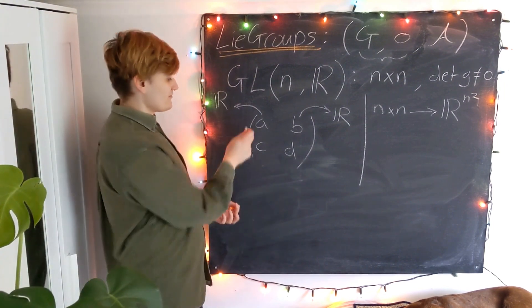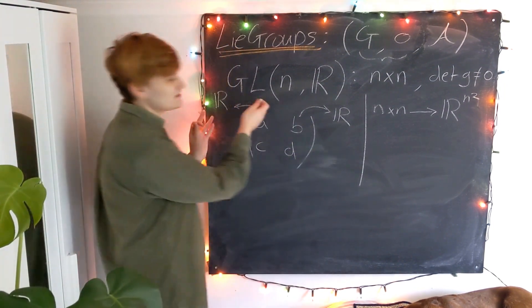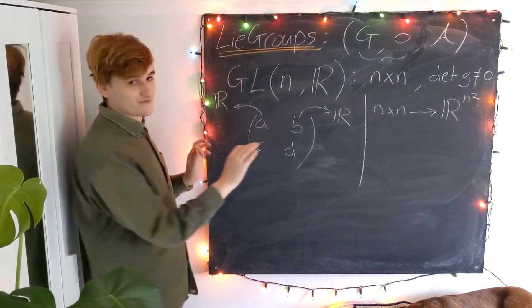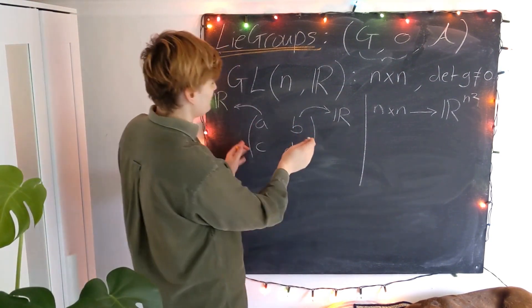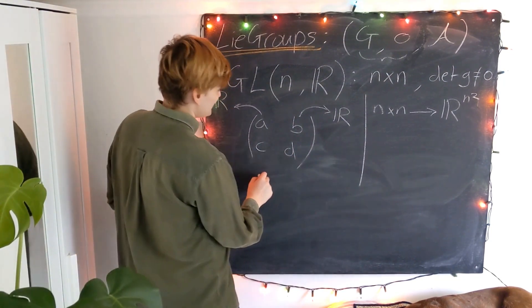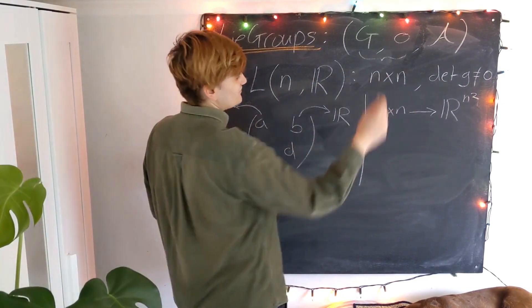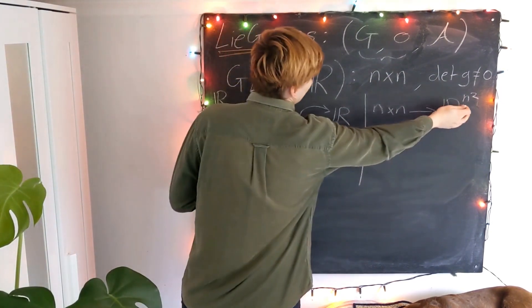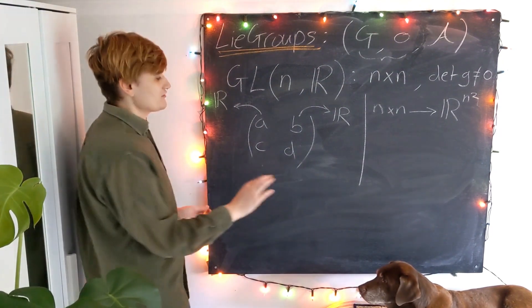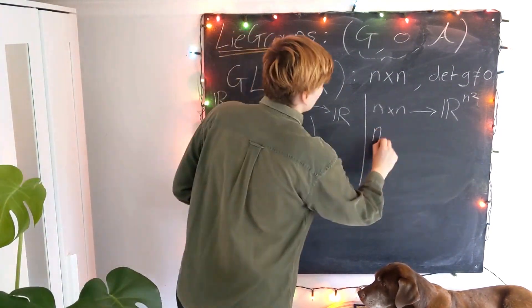So you should view the matrix elements now of a GL matrix. They're essentially just the coordinates of the manifold, which is kind of being described by this Lie group. And then of course, the more matrix elements you have, you're going to increase the number of coordinates you need by n squared. So in the case of the general linear group, we would say that we have n squared parameters.